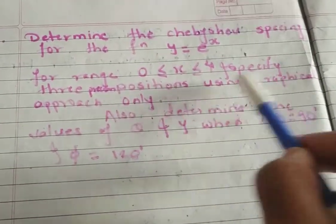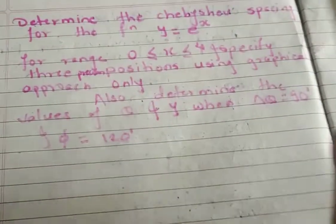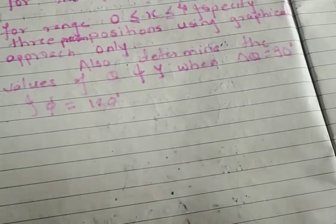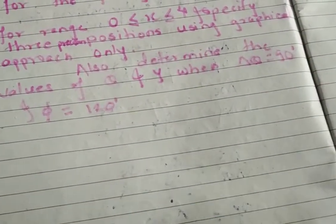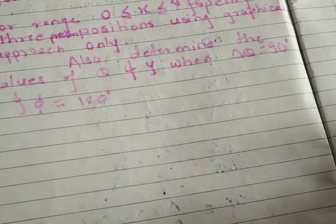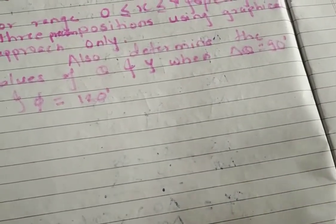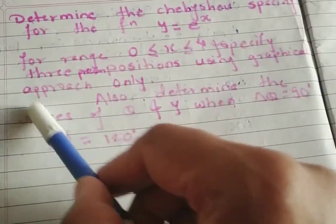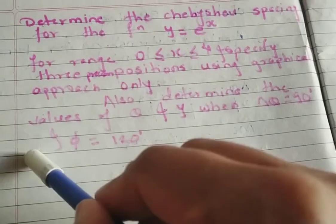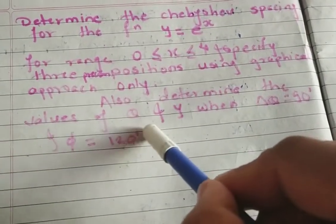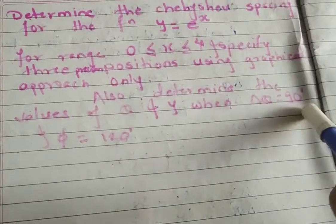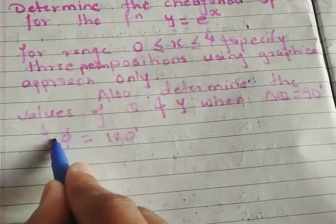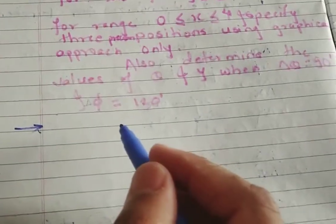We are going to use the graphical method only, not the formula xj = 1/2(xf + xs) - 1/2(xf - xs)cos(π(2j-1)/2n). Also, determine the value of theta and y when delta theta is equal to 90 degrees and delta phi is equal to 120 degrees.